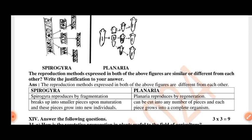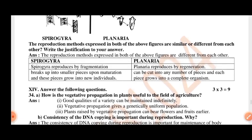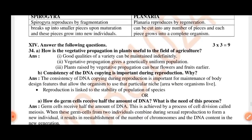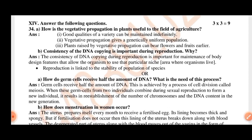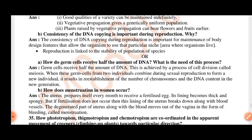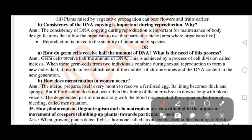The reproduction methods expressed in both figures of Spirogyra and Planaria are similar or different from each other. Write the justification for your answer. How is vegetative propagation in plants useful to the field of agriculture? Consistency of DNA copying is important during reproduction. Why? How do germ cells receive half the amount of DNA? What is the need of this process?